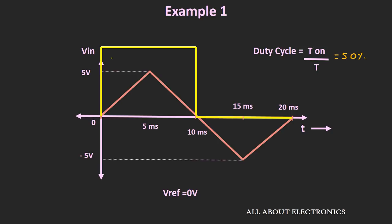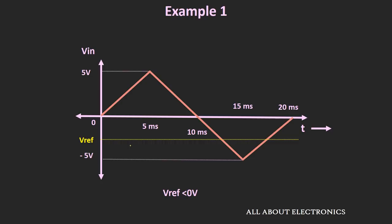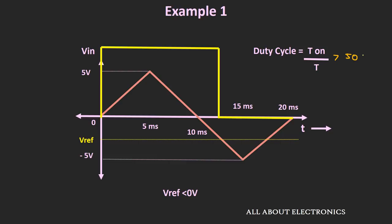Now, suppose if the reference voltage is less than 0V, in that case the output of this comparator will remain high for more than 50% of time, and the duty cycle will be greater than 50%. So to achieve a 25% duty cycle, the reference voltage should be greater than 0V.